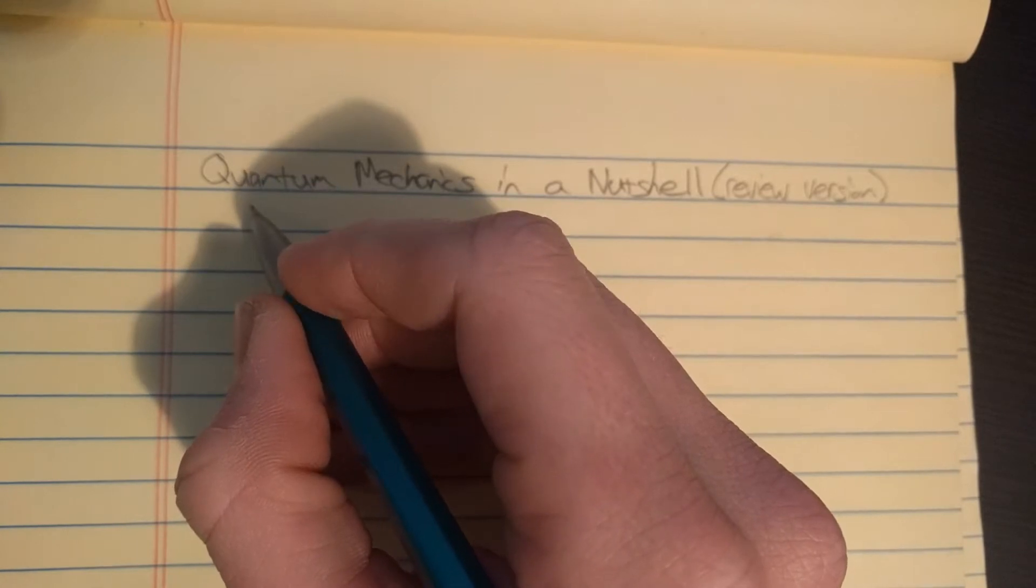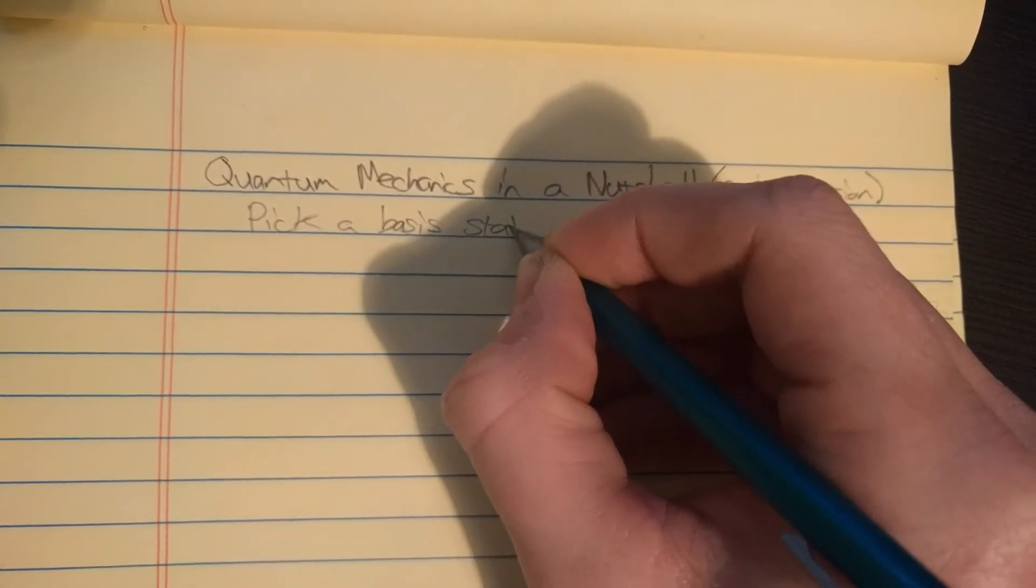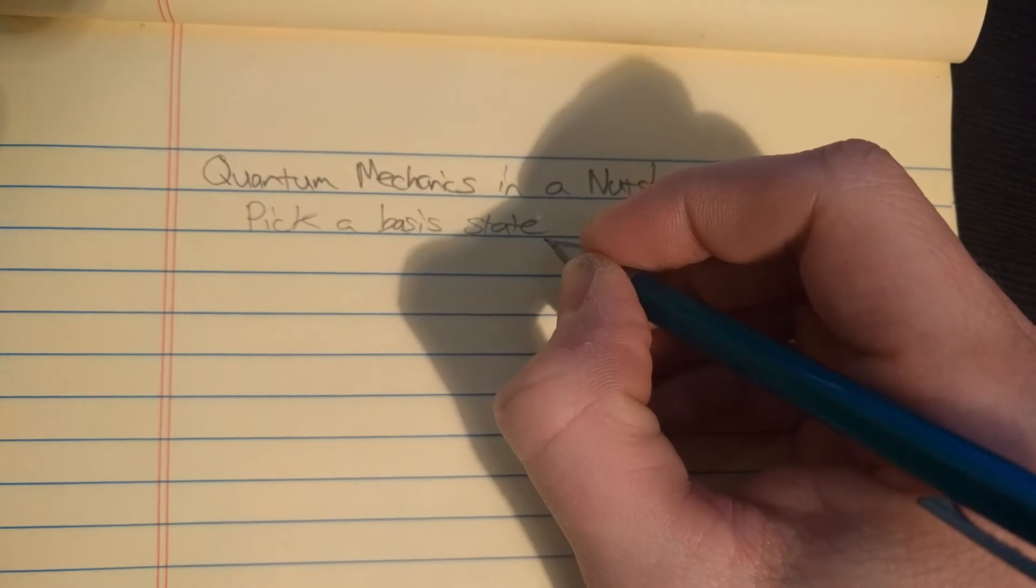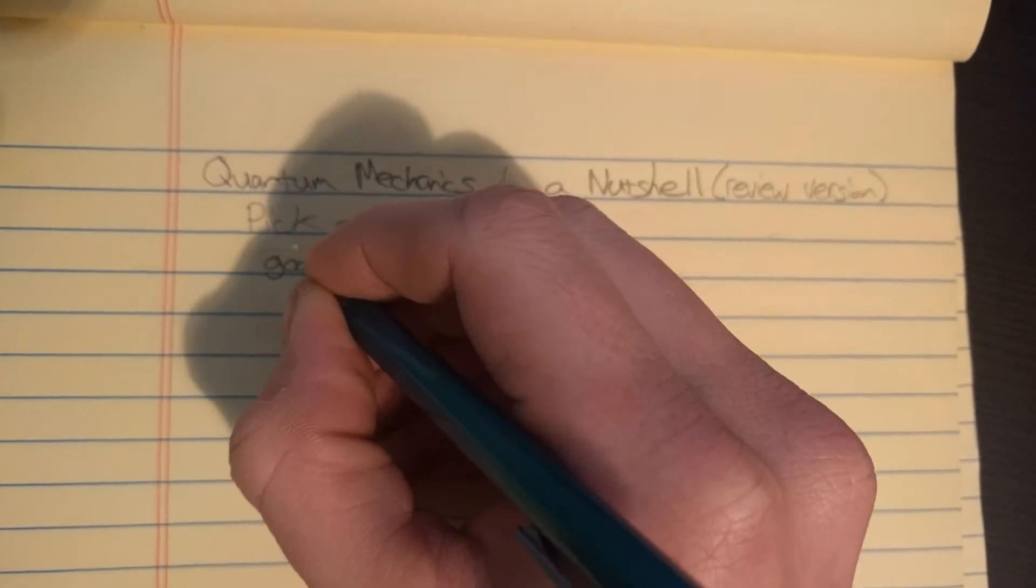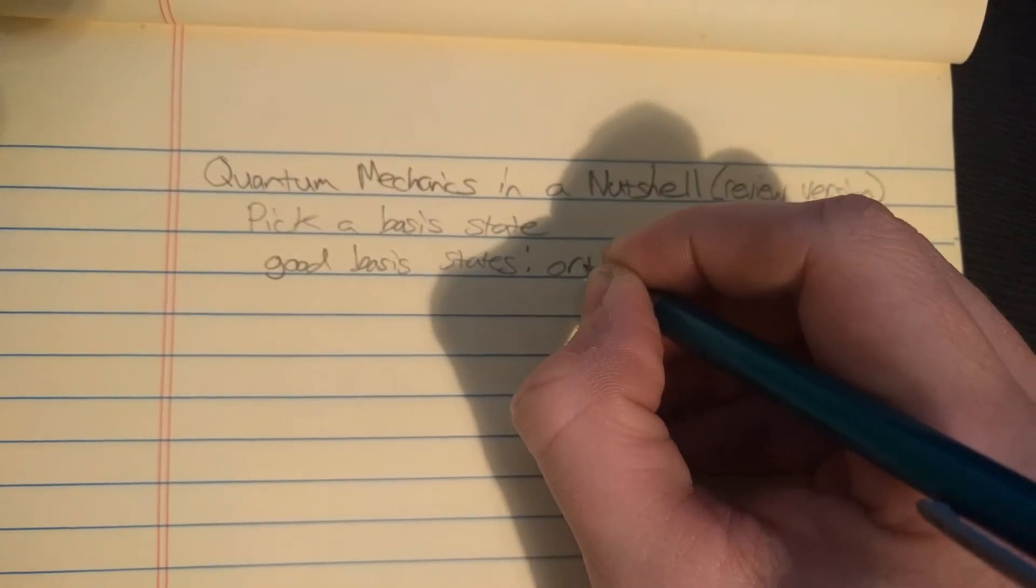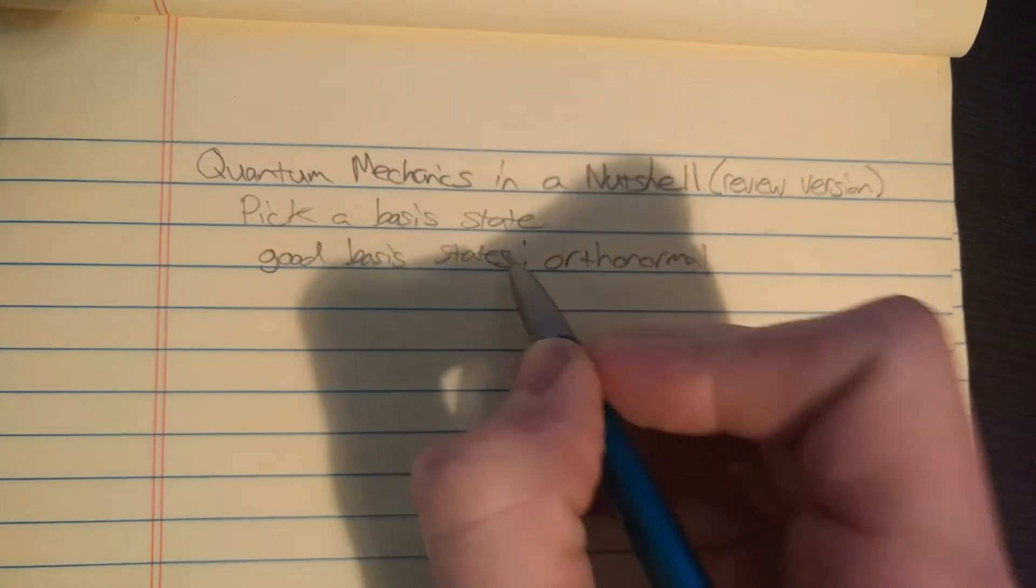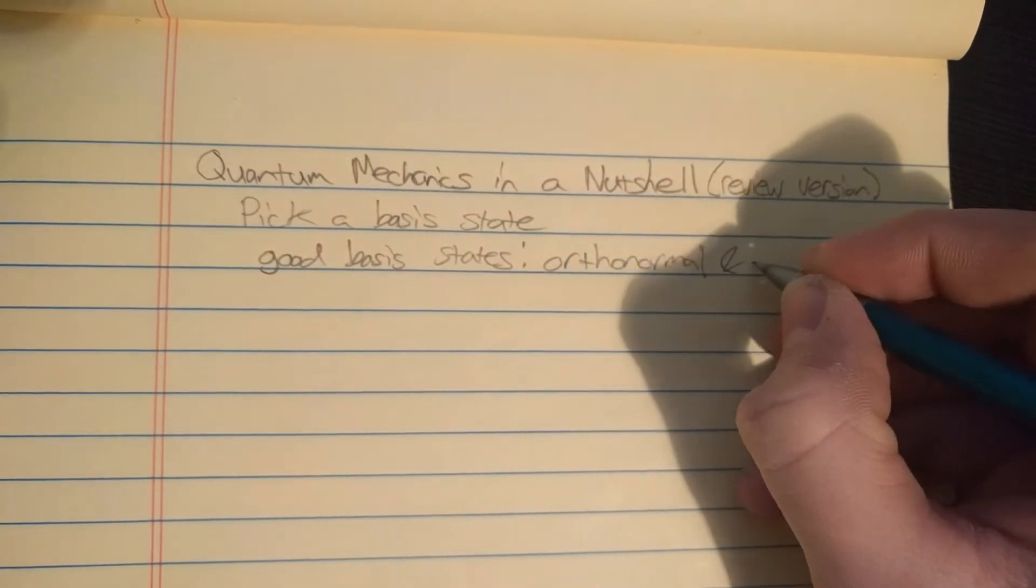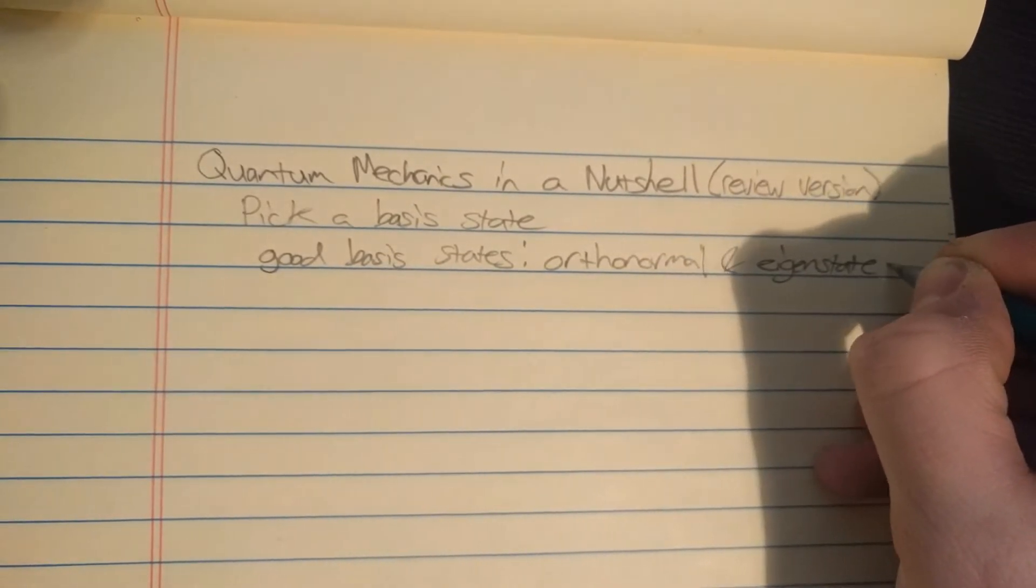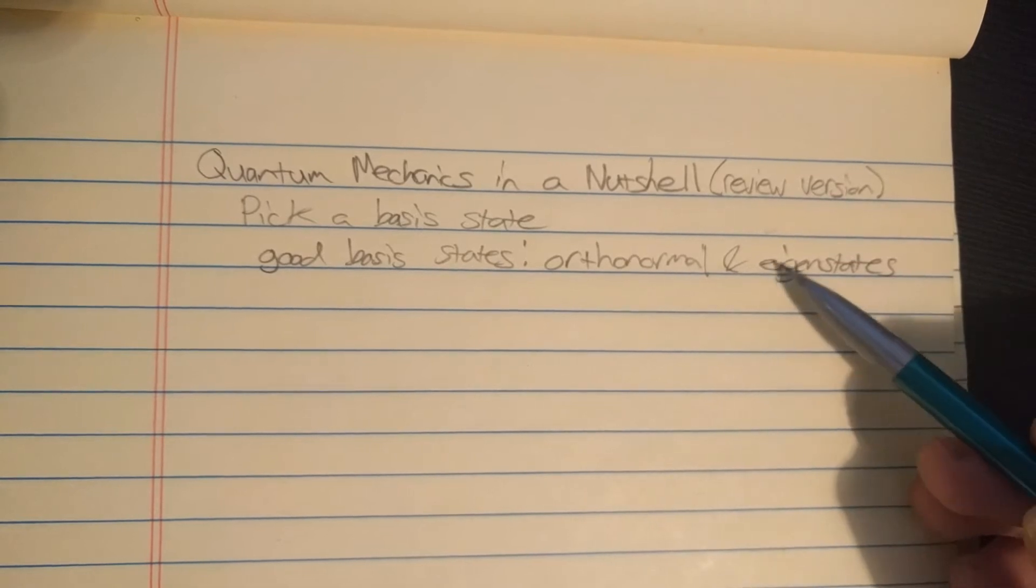In quantum mechanics, a very important thing to do is pick a basis state or states. Good basis states are orthonormal and good basis states are eigenstates or stationary states. That means the basis states do not evolve in time, so they're stationary - that's the same thing as eigenstates.